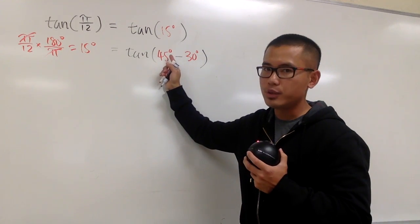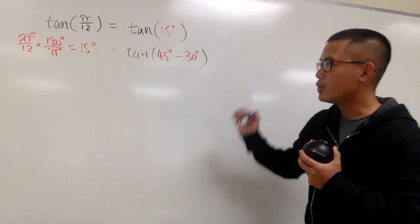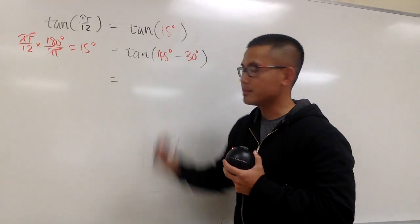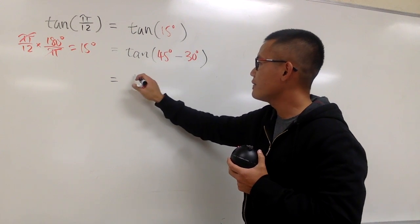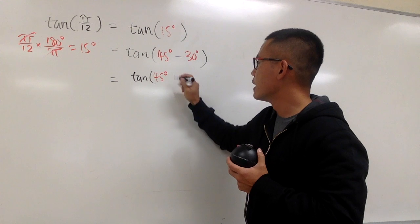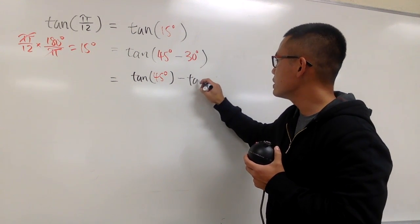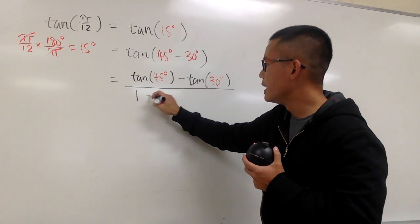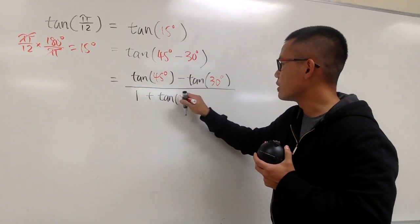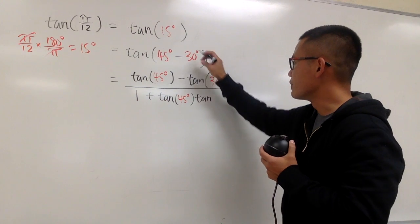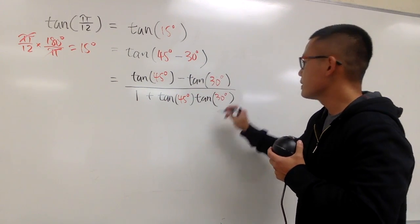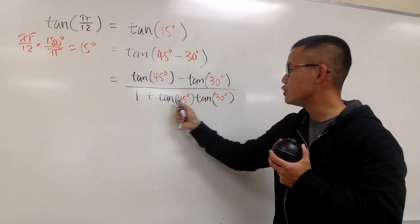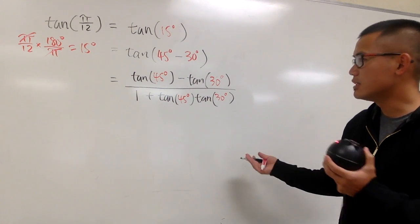We know how to work with 45 degrees and 30 degrees, but first we need the difference formula for tangent. That is: tangent of 45 degrees minus tangent of 30 degrees, all over 1 plus tangent of 45 degrees times tangent of 30 degrees. Tangent of the first minus tangent of the second, all over 1 plus tangent of the first times tangent of the second.